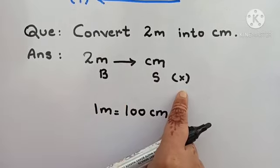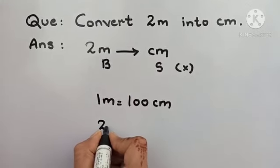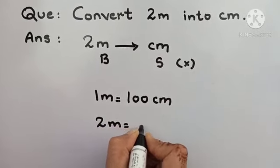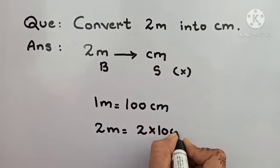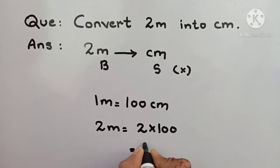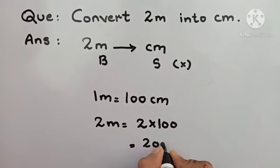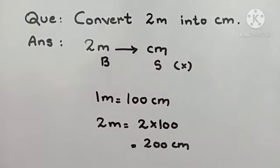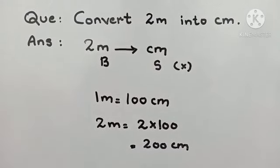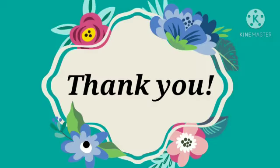So what next? We have to do the multiply. 2 meter is equal to 2 multiplied by 100. The answer is 200 centimeter. Thank you children. Enjoy learning.